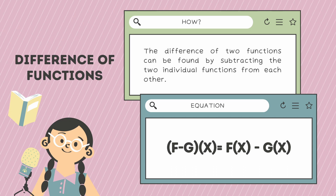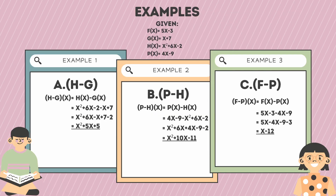Here are the examples. Example 1a: (h − g)(x) = h(x) − g(x) = x² + 6x − 2 − (x + 7) = x² + 6x − x + 7 − 2 = x² + 5x + 5.